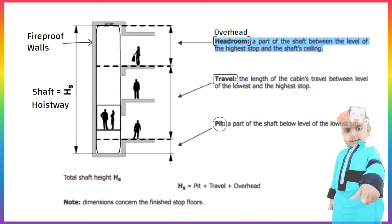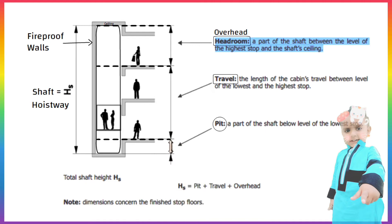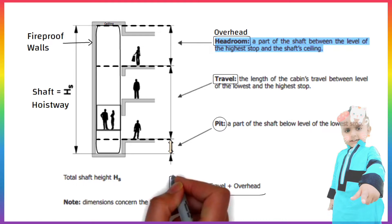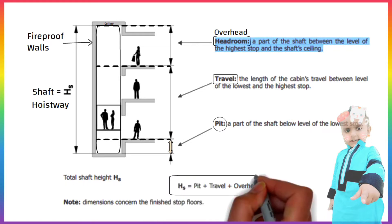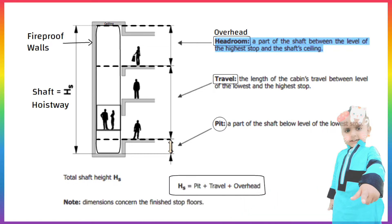Pit is a part of the shaft below the level of the lowest stop. To calculate shaft height, it is equal to Pit plus Travel plus Overhead.